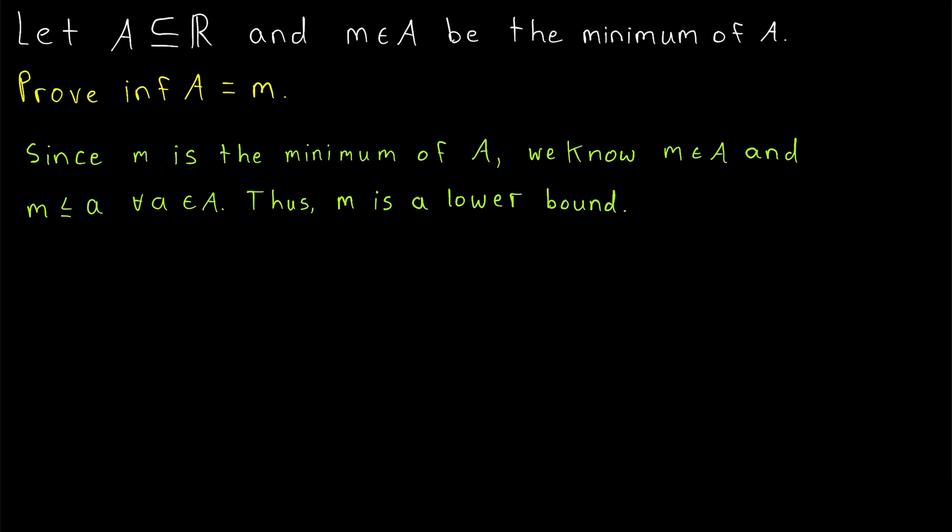Let's suppose for the sake of contradiction that there is a lower bound of A that's greater than M. So we say, suppose for contradiction SFC, that there exists a real number X so that X is less than or equal to every element of the set A, that means that X is a lower bound of A, and X is greater than M. So we're supposing that there is a lower bound that's greater than M.